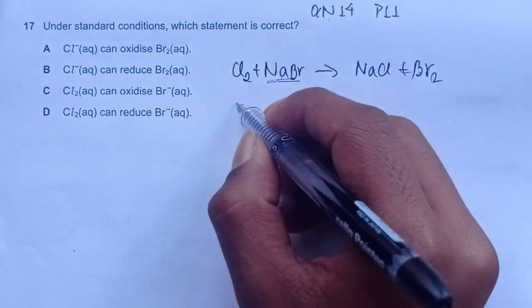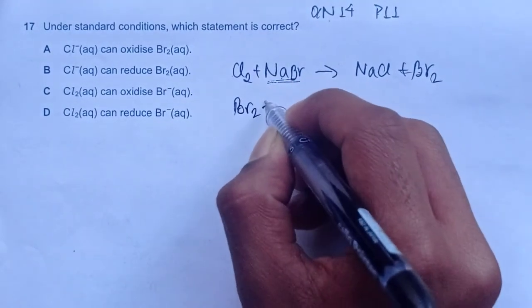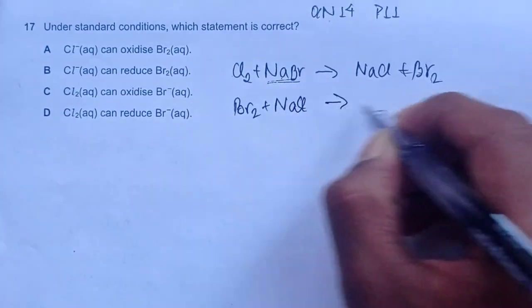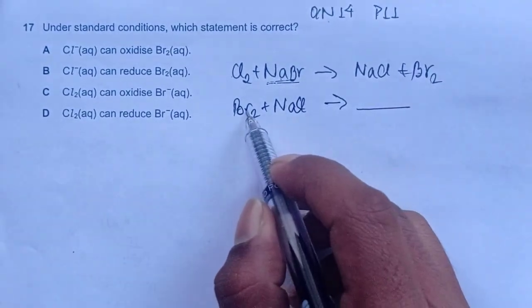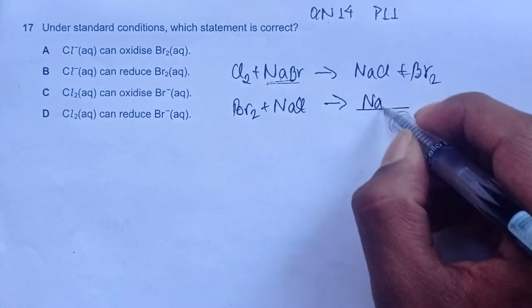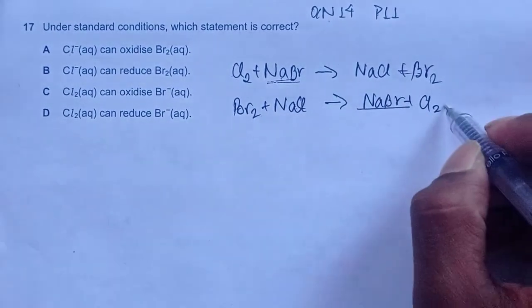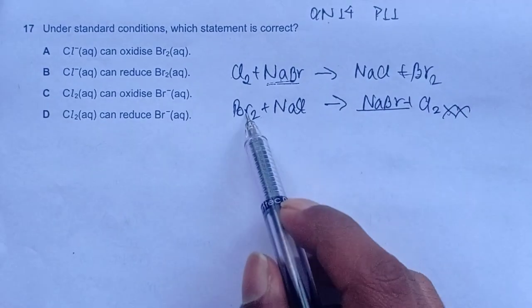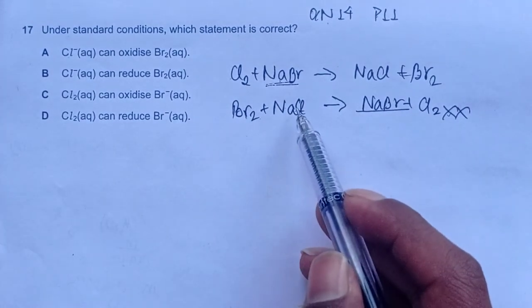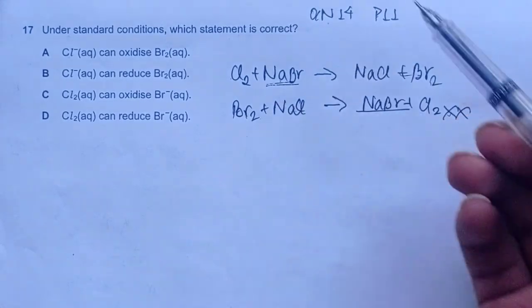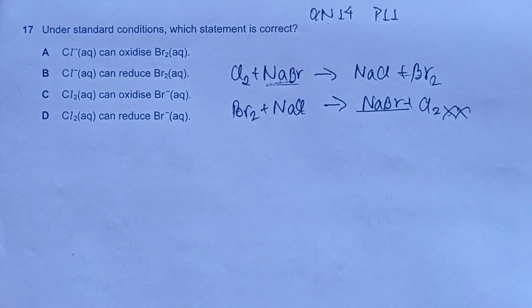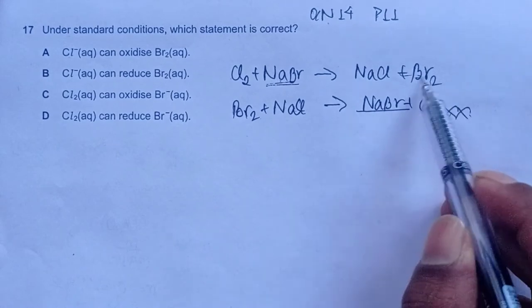Now, if we see for example, Br2 plus NaCl, we will definitely not have NaBr plus Cl2 because this equation is incorrect. Bromine cannot displace chlorine from NaCl because chlorine is more reactive than bromine. You could read more about it on reactivity of halogens going down the group. So this equation is incorrect and this is correct.